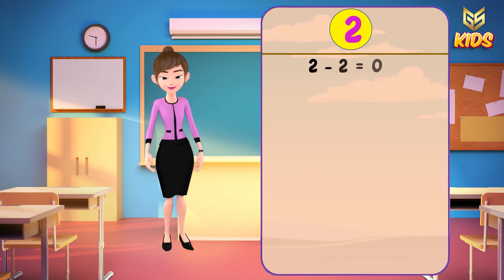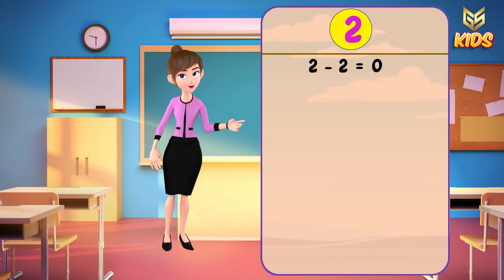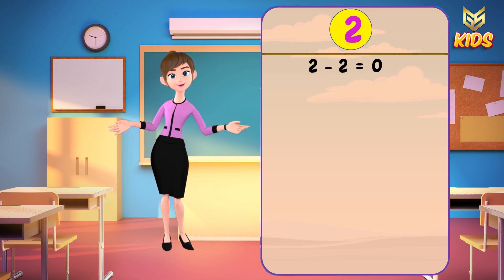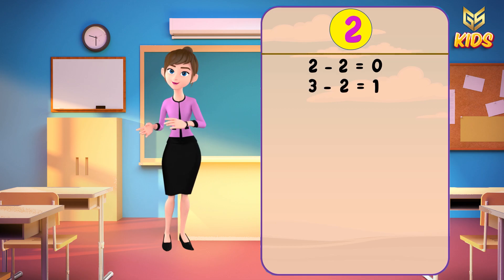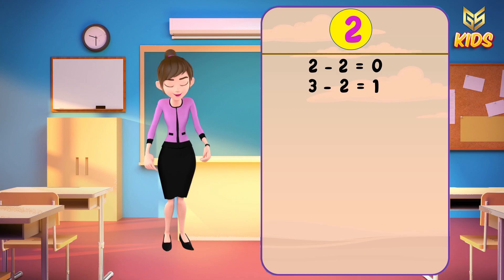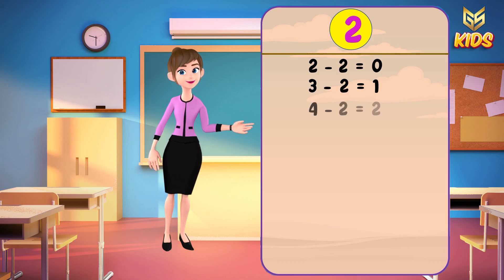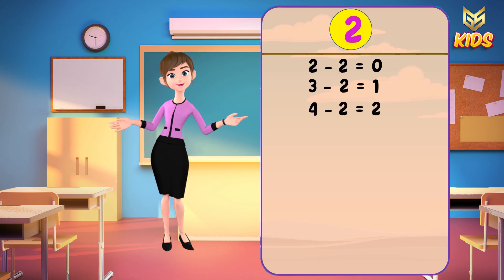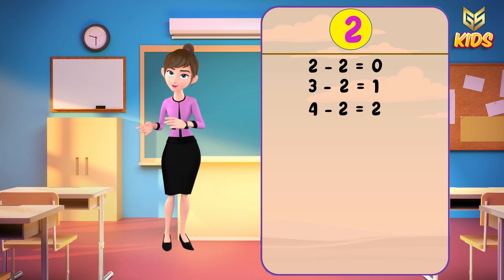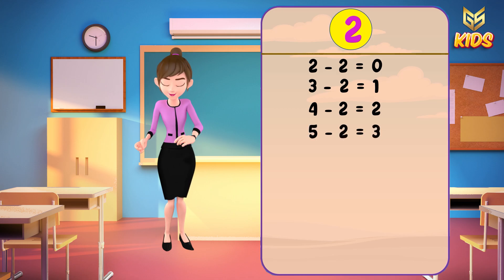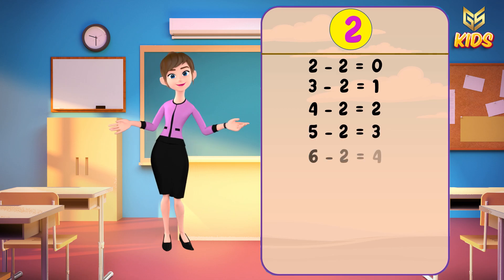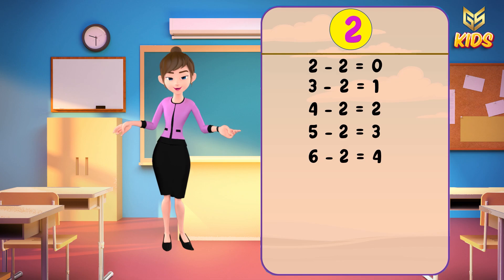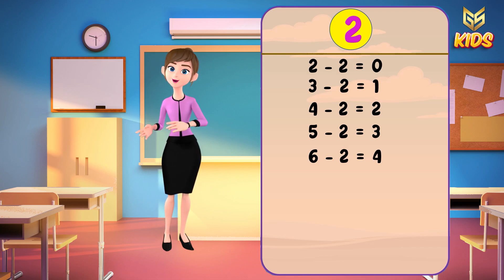2 minus 2 is equal to 0, 3 minus 2 is equal to 1, 4 minus 2 is equal to 2, 5 minus 2 is equal to 3, 6 minus 2 is equal to 4.